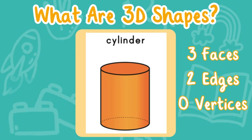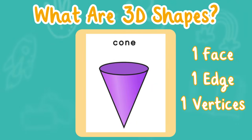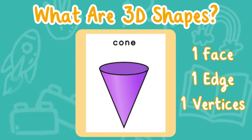Have you ever seen a cylinder? A cone has one face, one edge, and one vertex. Have you ever seen a cone before?